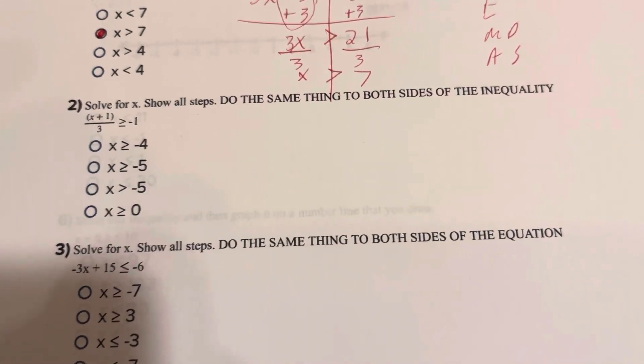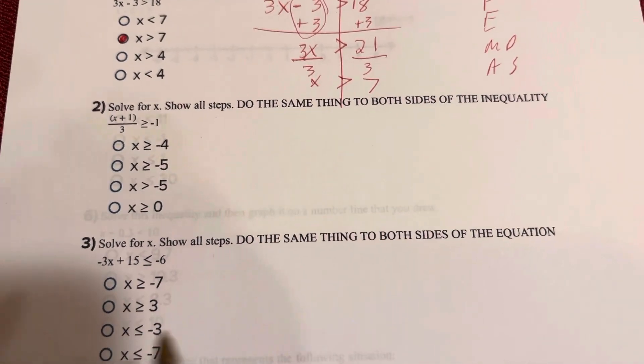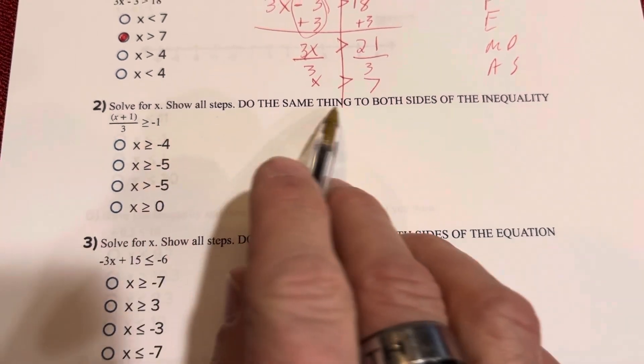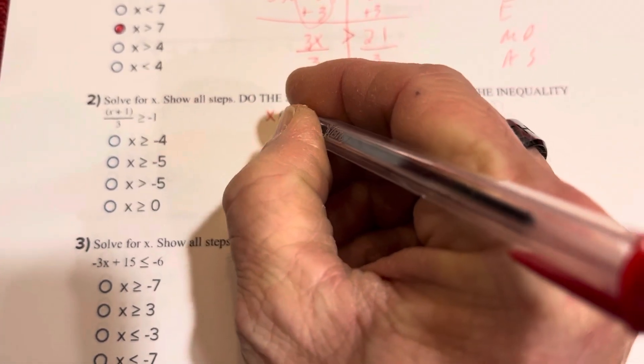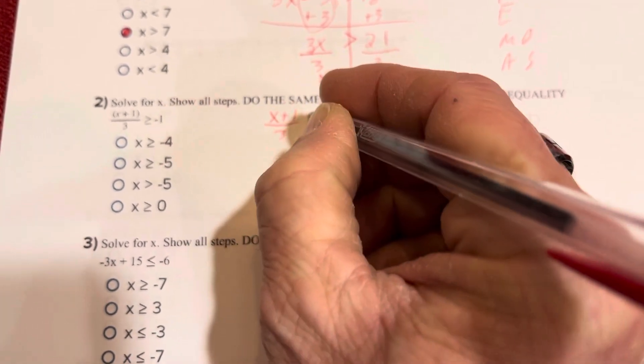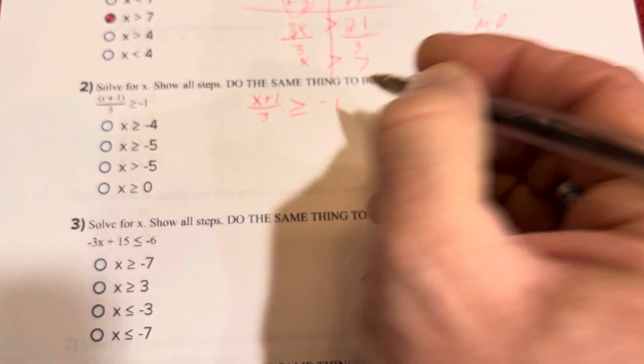Okay, number two on the corrections for the test. It says solve for x, show all steps, do the same thing. x plus 1 divided by 3 is greater than or equal to negative 1.